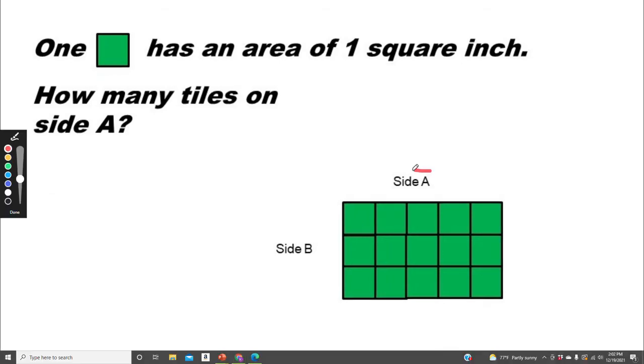So this is side A, and it has one, two, three, four, five tiles.